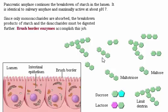Since only monosaccharides are absorbed, the breakdown products of starch and the disaccharides must be digested further. Brush border enzymes accomplish this job.